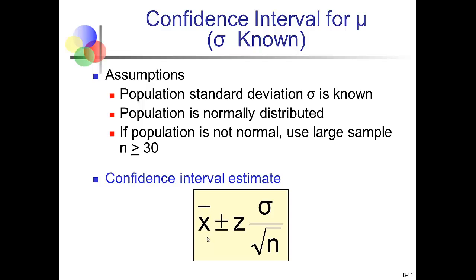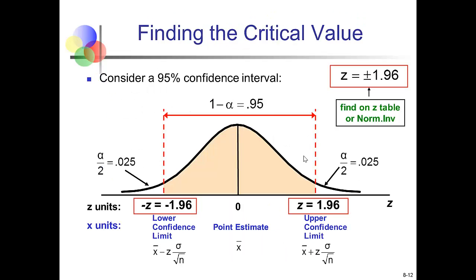We take the sample mean as our point estimate, find a critical value and multiply it by the standard error, subtract the right-hand side from the mean to get the lower confidence limit, and add it to the sample mean to get the upper bound. To find the critical value for a 95% confidence level, we want 95% of the probability between the lower and upper bounds. Since we know the true population standard deviation, we use a Z-score from the standard normal distribution.